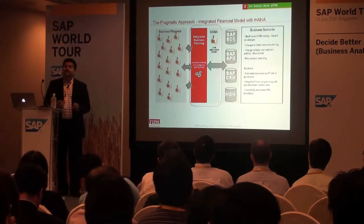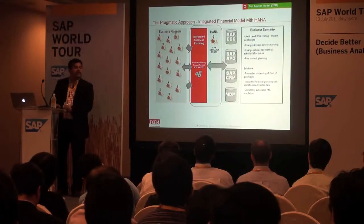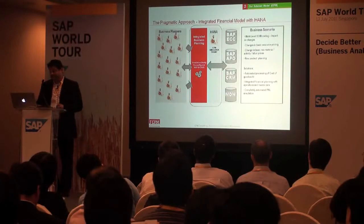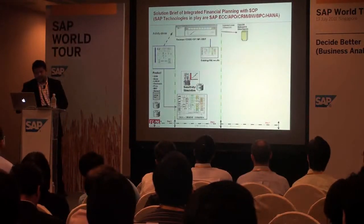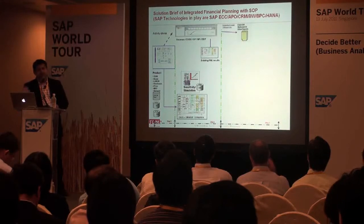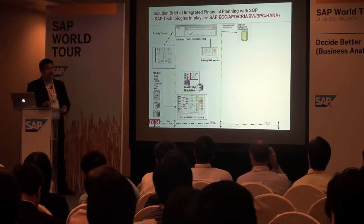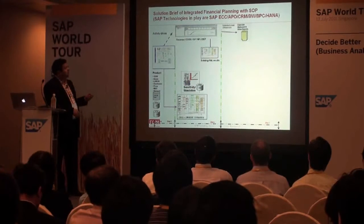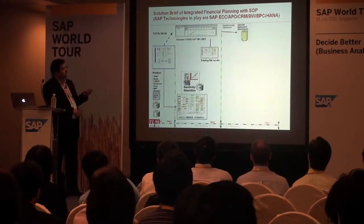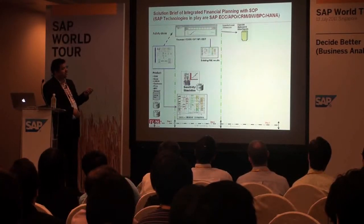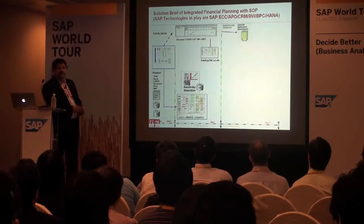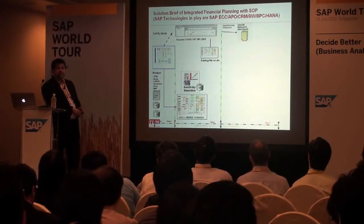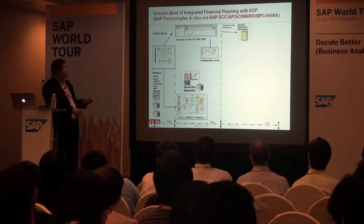A similar situation exists in HR, manpower planning, sales planning, and other areas. In today's discussion, we have put together a solution around SAP technologies — so if you are not an ECC company, this may not apply to you. The technology stack includes ECC, APO, CRM, BW, BPC, and HANA, which is still at a proof-of-concept and conceptual stage right now.